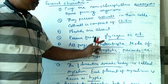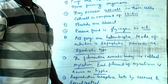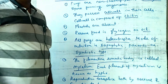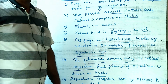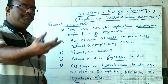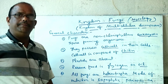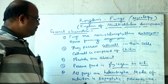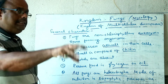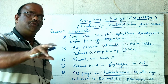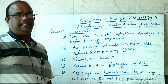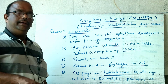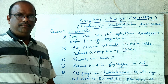Some fungi grow on dead bodies, drawing food from dead organic materials; these are called saprophytes. Some fungi draw food from living bodies and are called parasites. Some fungi live in a mutual or symbiotic relationship — for example, some fungi live with algae, providing protection and water to algae, while in turn drawing food from algae. This symbiotic relationship of algae and fungi is called lichen.